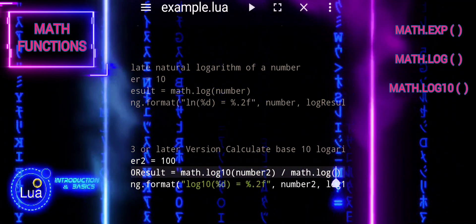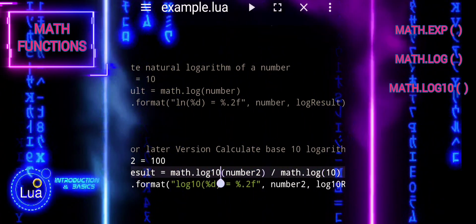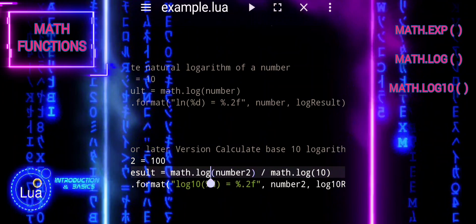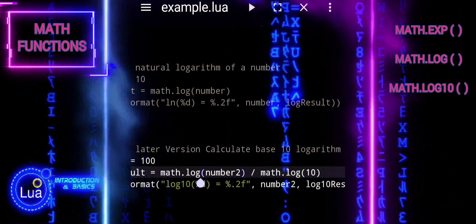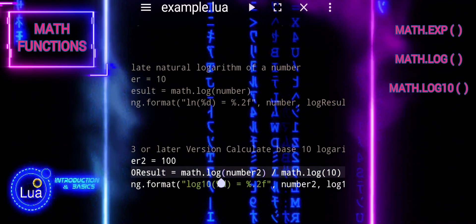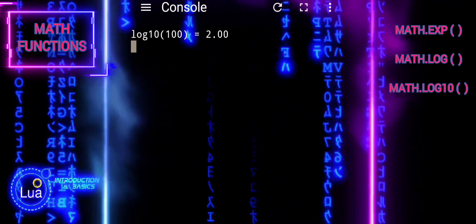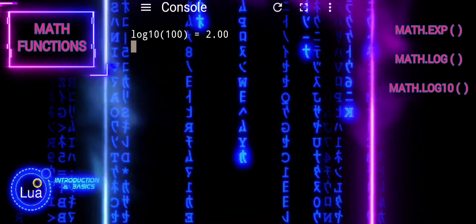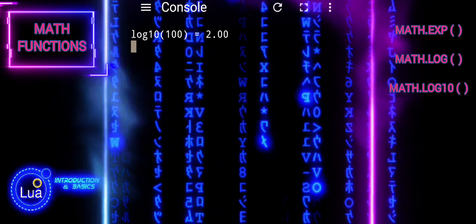We define a custom function log10 that calculates the base 10 logarithm of x by dividing the natural logarithm of x by the natural logarithm of 10. This custom function replicates the behavior of math.log10 for older Lua versions where this function is not available.